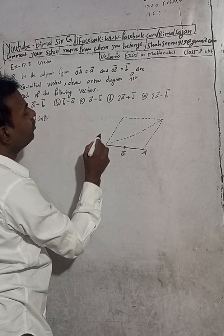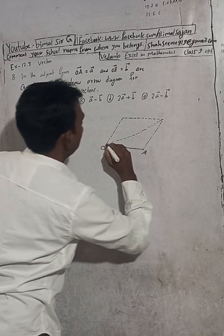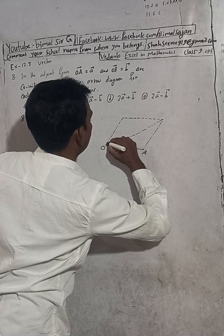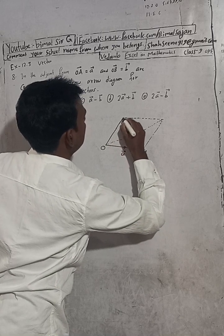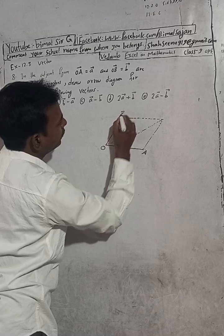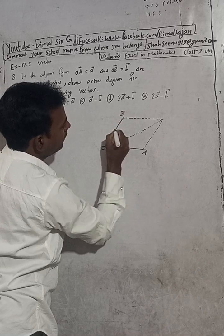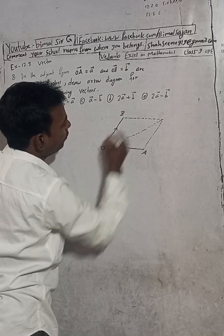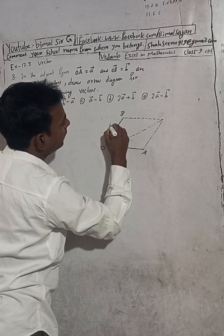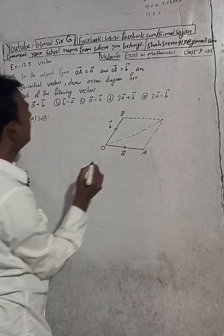Now next is OB vector. So this is our OB vector. This is B. So this direction, O to B, this direction is our B vector.